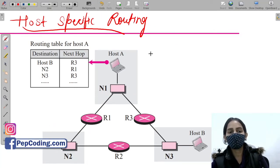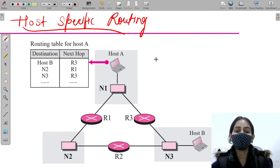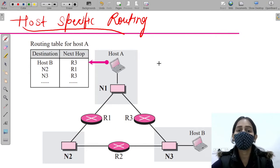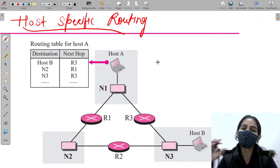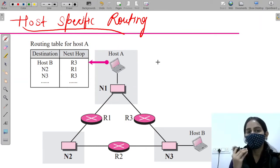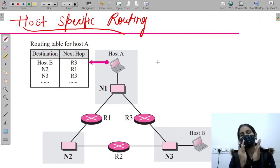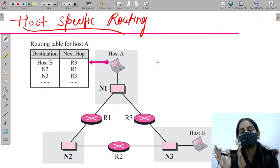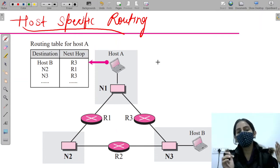But in this particular method, our aim is not that. We are actually not reducing the routing table, which is a kind of disadvantage. But we use this method when we want specific control over our host. For example, if some packet is going to this destination, then we want all those packets to get transferred from a particular router.